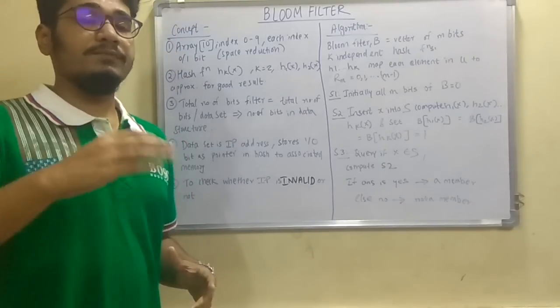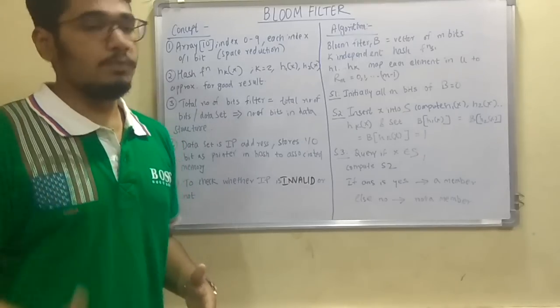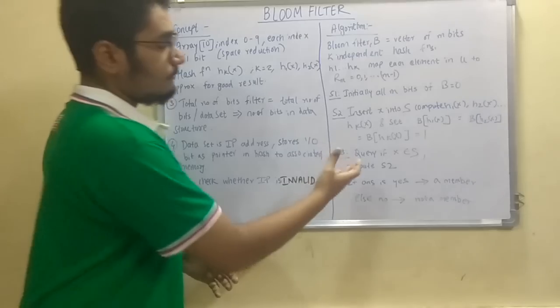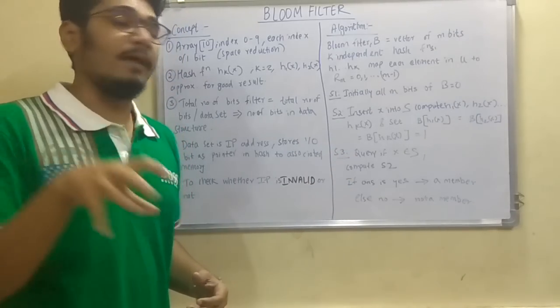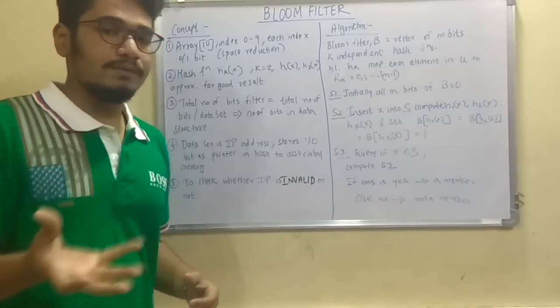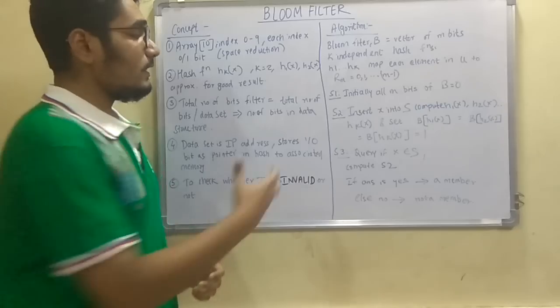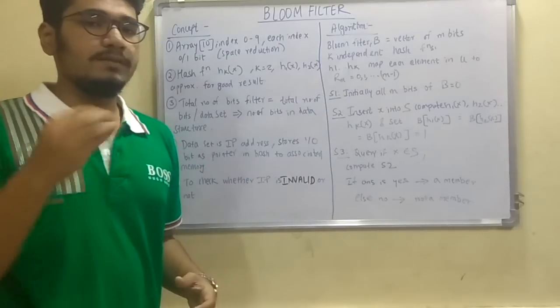First we insert it to the hash function and then from hash function we insert it to the bloom filter, that is b. Next, once you do the insertion, next you have to query if that particular x which you have inserted into the sample s belongs to the sample or not, that is a universal set. And this querying is basically running this step 2. So we'll check whether each of these elements are belonging to that particular sample or not.